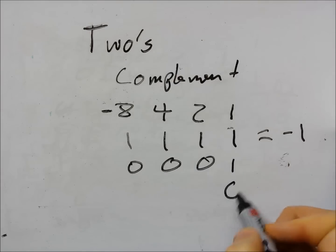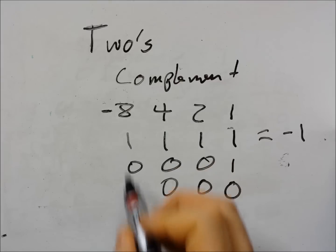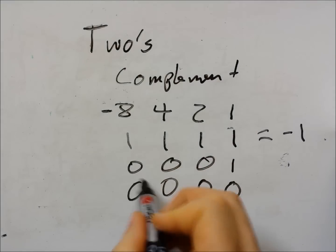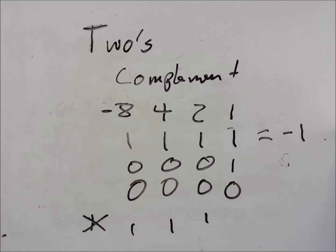One and one make zero carry one. One and one zero carry one. One and one zero carry one. And then one and one zero. And then what we do is we just ignore that last bit. So minus one plus one is equal to zero which is exactly right. That's completely what we want.